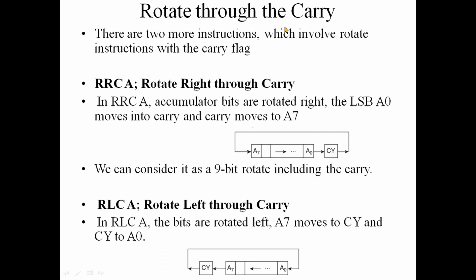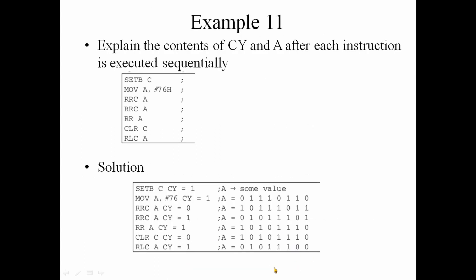This step shows the accumulator value and PSW carry value included in the rotation. RRC A is rotate right through carry — bit A0 goes into carry and the old carry value goes into A7. RLC A is rotate left through carry — carry goes into A0 and A7 goes into carry.